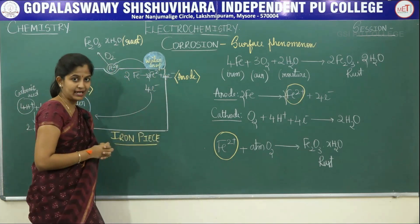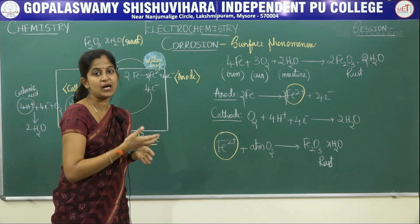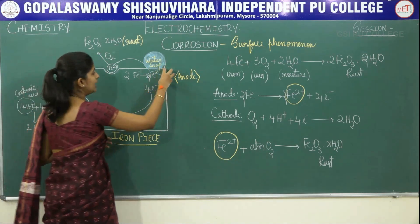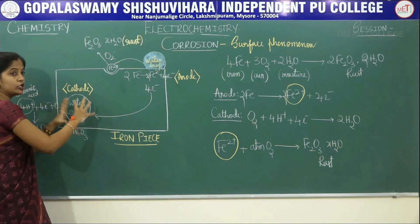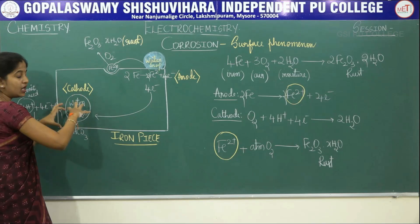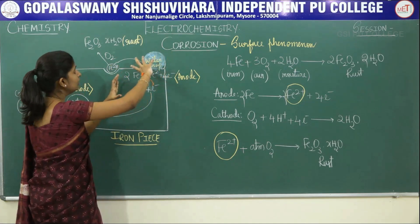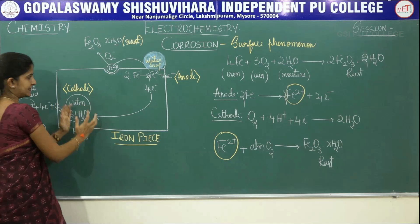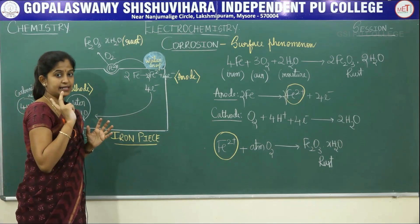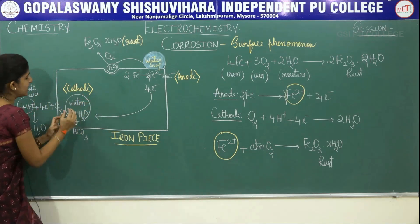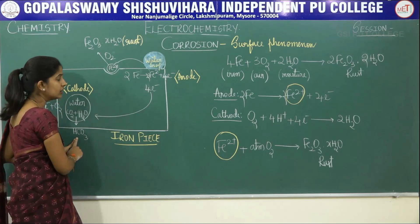The 4 electrons produced at the anodic side move inside the metal. Since metals are good conductors of electricity, the electrons travel through the metal from one side to another side, where another water droplet is present. At that side, carbon dioxide has reacted with water to form carbonic acid (CO₂ + H₂O → H₂CO₃). So the water droplet on the other side is rich in carbonic acid.